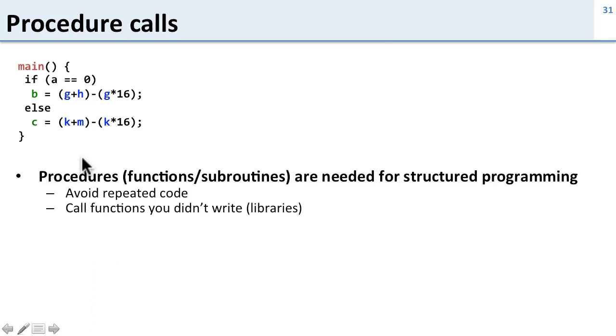Let's take a look at an example. Here I have some code where A equals zero. I do something to calculate B and otherwise I do something to calculate C. If you look at this code you see this is the exact same function just with different inputs twice. So instead of writing the same function twice what I want to be able to do is just write a function call.